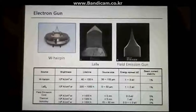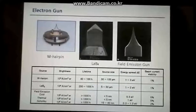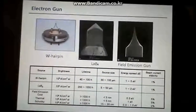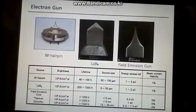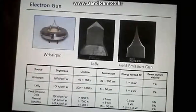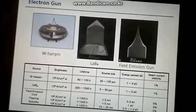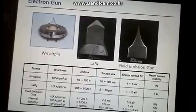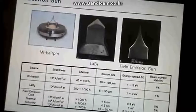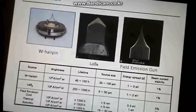COSEM's electron microscope uses a heat-emitting tungsten filament. This tungsten filament has advantages in that it is cheap and capable of use at a low degree of vacuum, at about 10 to the negative 5th power of torr. However, its beam dimension and luminance are not that great. Moreover, its hours of use are 40 to 100 hours, which are short.